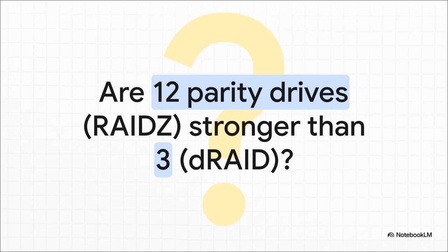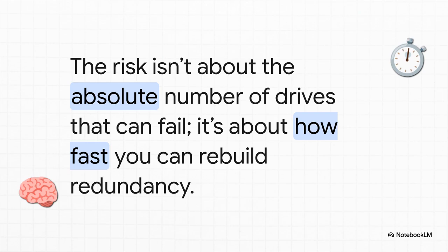This is the question that messes with everyone's head. You look at a big RAID-Z setup and you might see, say, 12 drives worth of redundancy. Then you look at a DRAID setup and see it can only handle 3 failures, and you think — wait, 12 is way more than 3. This DRAID thing sounds weaker. But that thinking is a trap. The key idea you have to wrap your head around is this: the real danger isn't about the total number of drives you can lose. It's all about how long you're stuck in that high-risk danger zone while the array is degraded. The faster you get your redundancy back, the safer you are. Period.